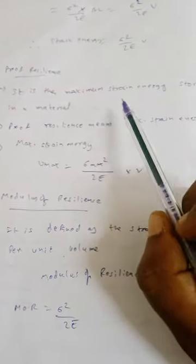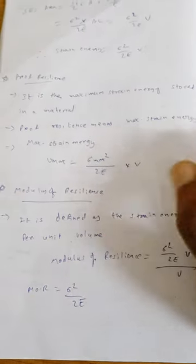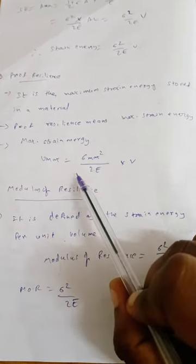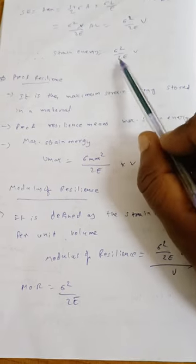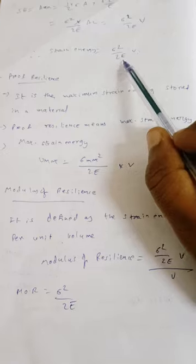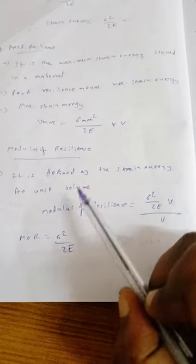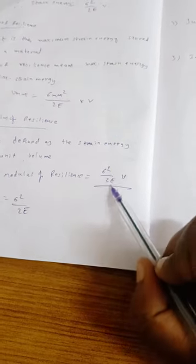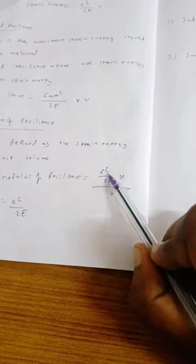What is proof resilience? It is the maximum strain energy stored in a material. So U_max = σ_max² × V / 2E — this is proof resilience. What is the modulus of resilience? It is the strain energy per unit volume, U / V. Since U = σ²V / 2E, dividing by V, the V cancels and you get modulus of resilience = σ² / 2E.